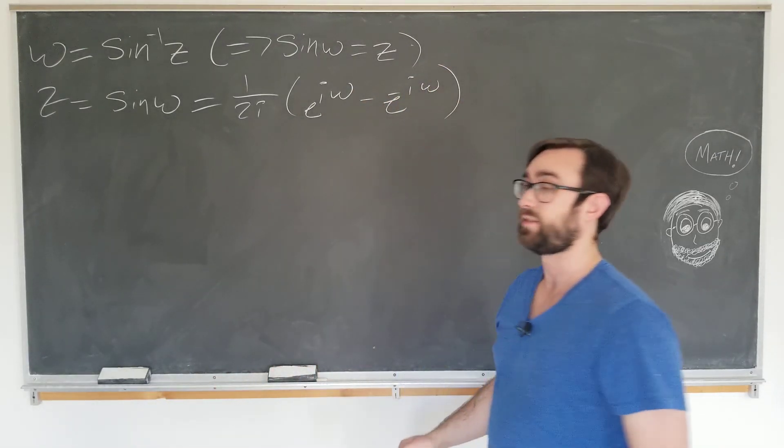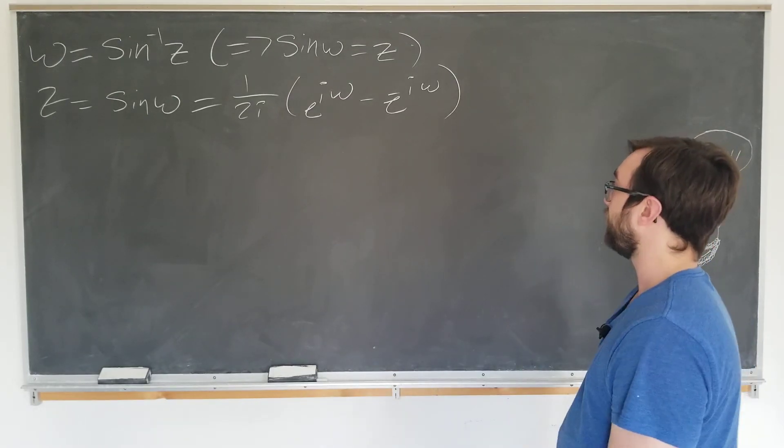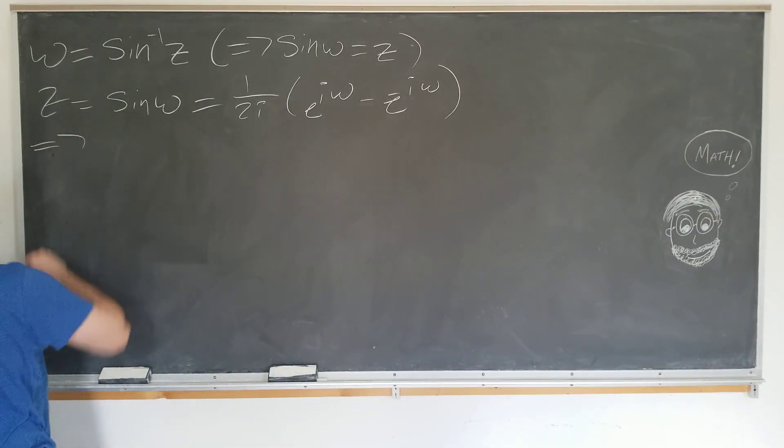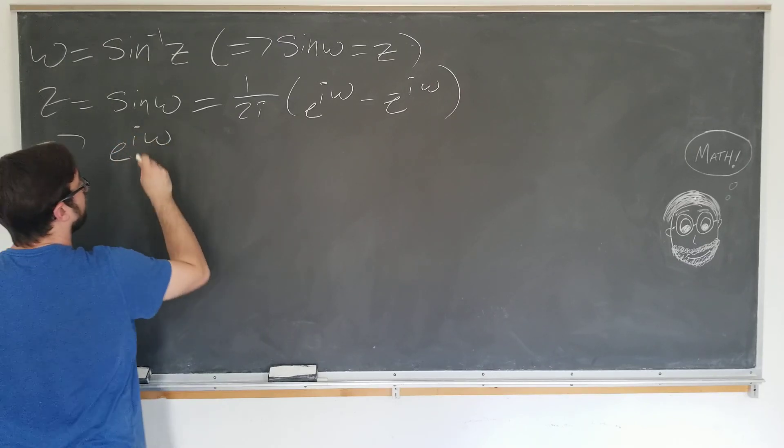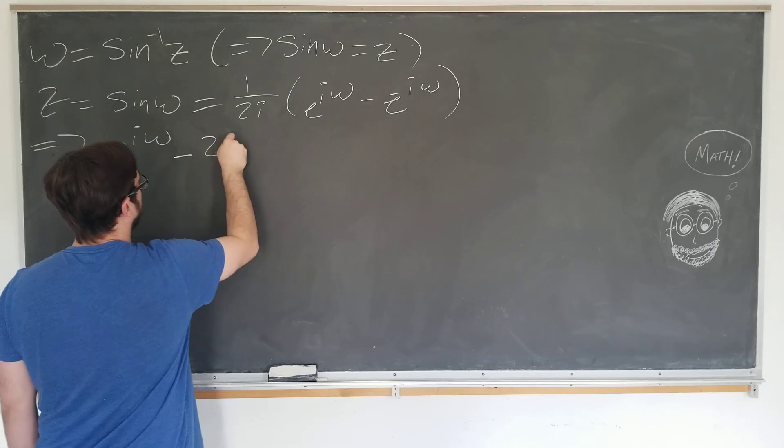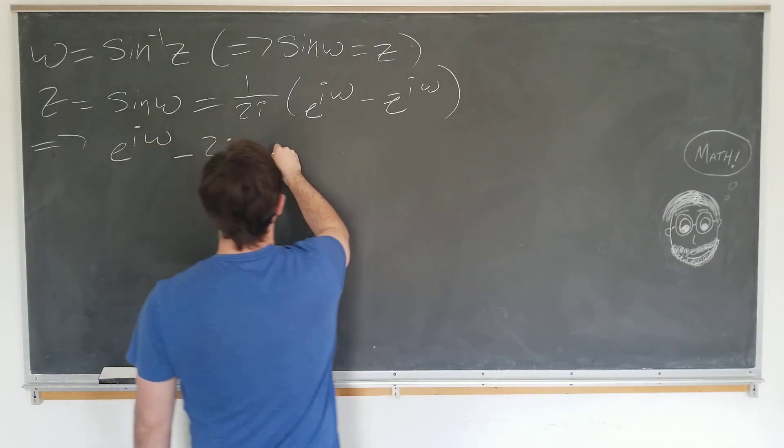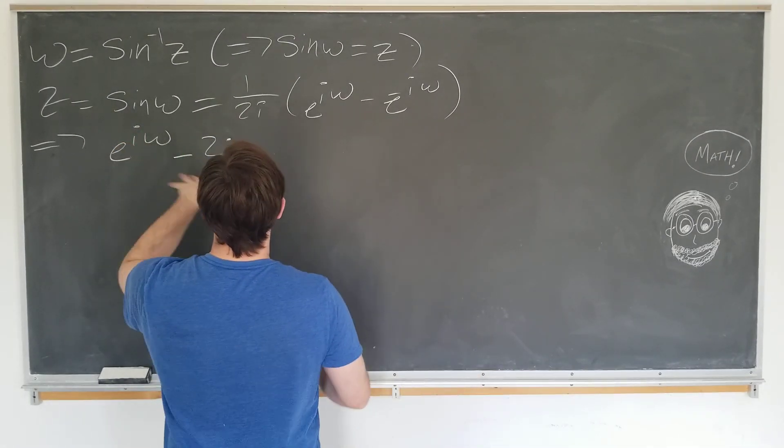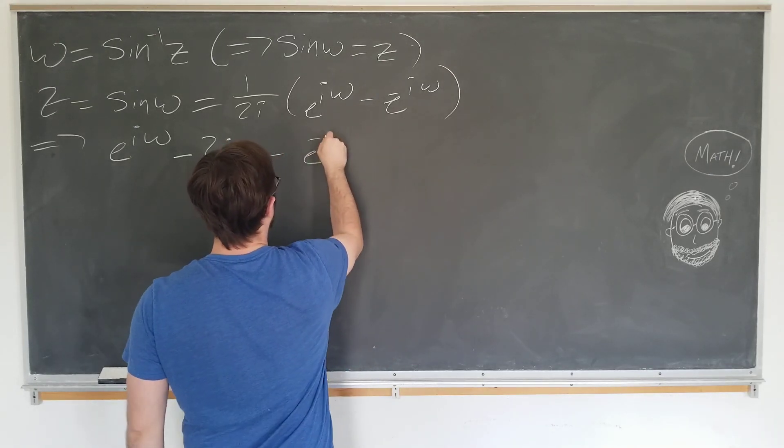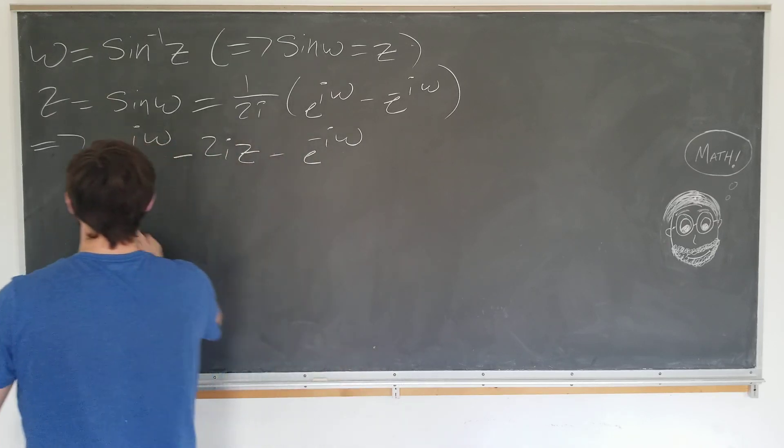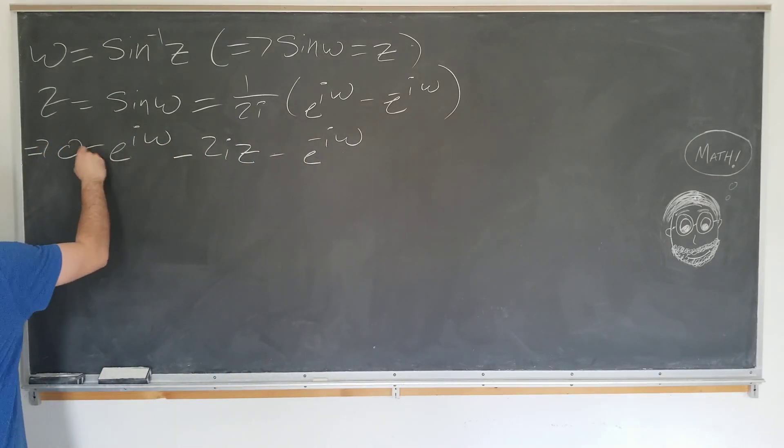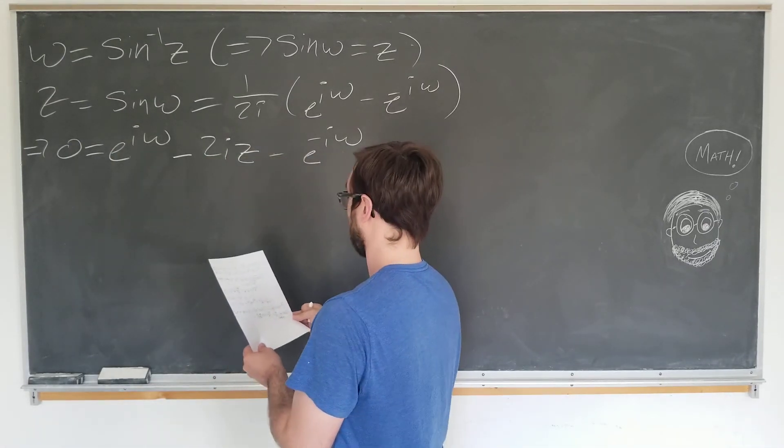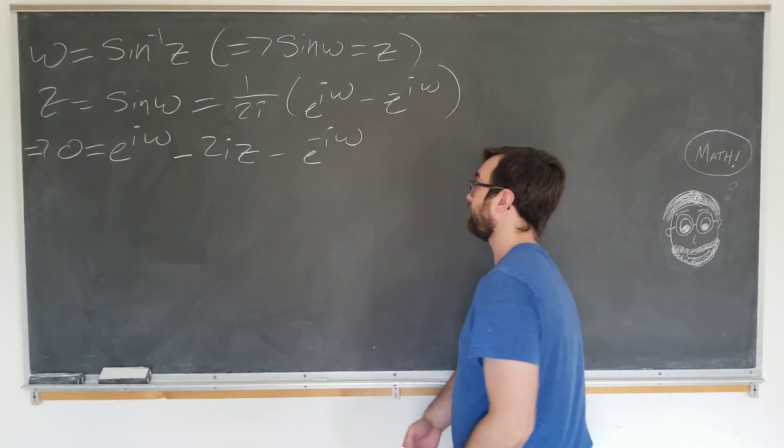For this video, you only need to know the sine values. So like last video, we are going to simplify. So we're going to have e to the i omega minus 2i z minus e to the minus iw is equal to 0. And we want to multiply by e to the i omega. We are now going to multiply by e to the i omega like last time.